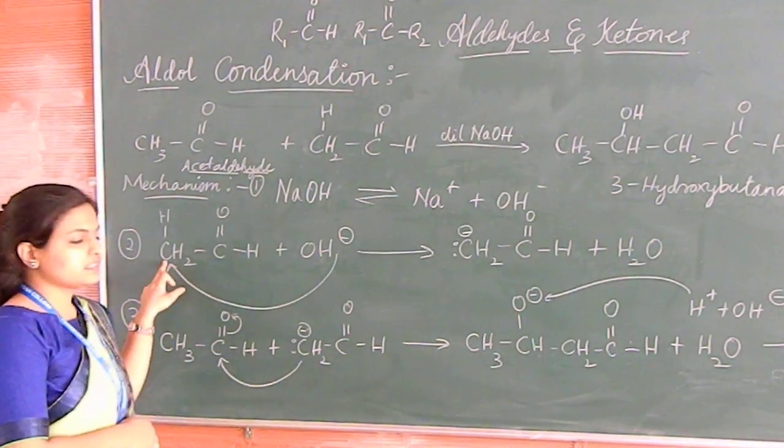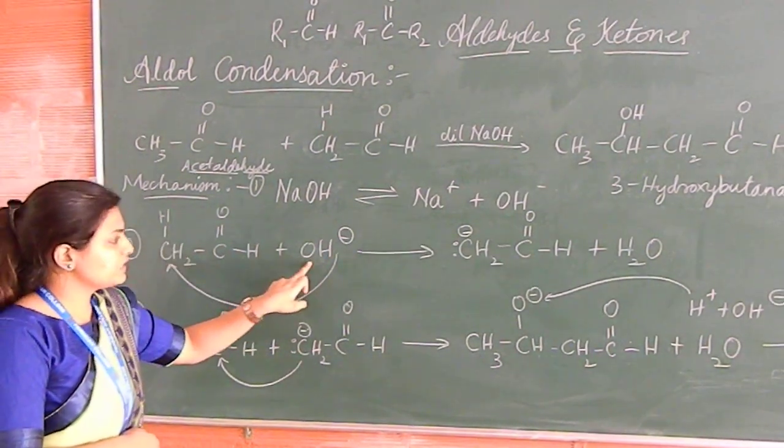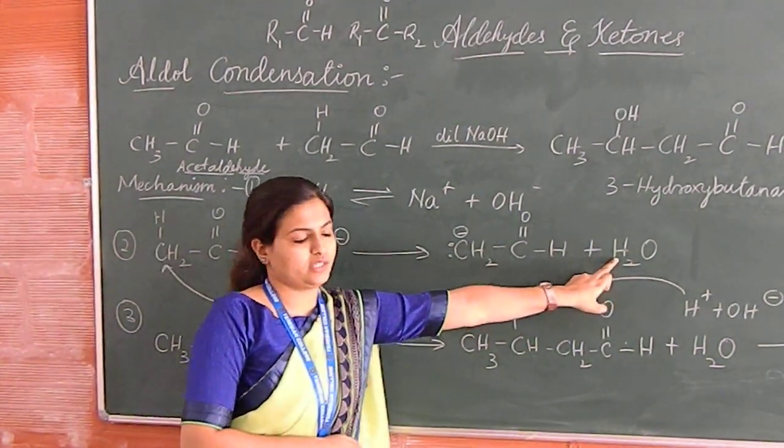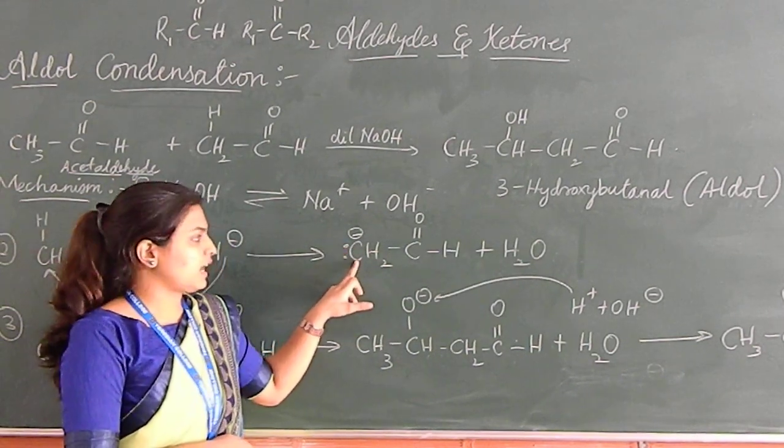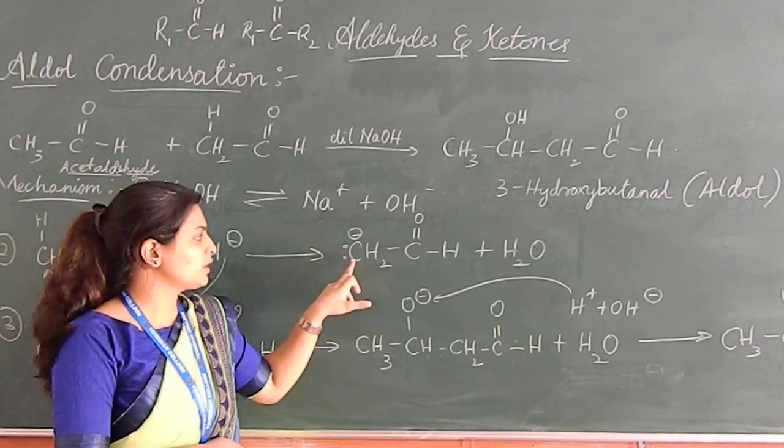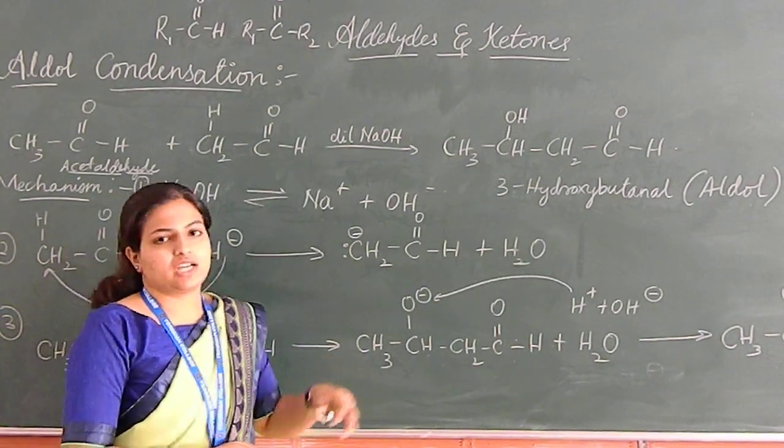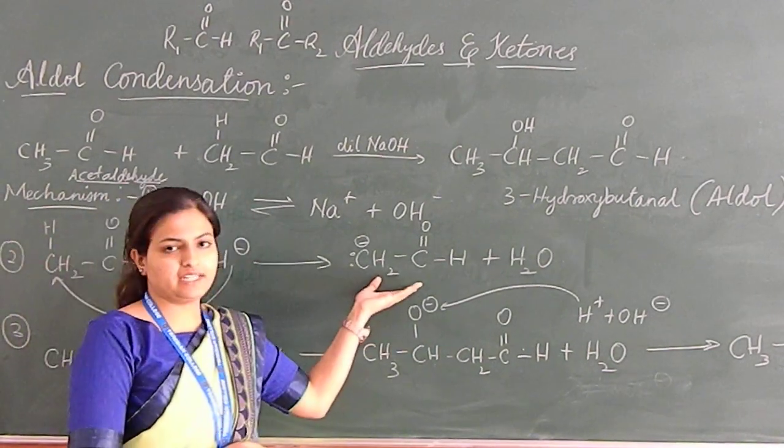What does it do? OH- grabs this H+ and eliminates as water. And this turns as an enolate ion, which is enolate ion in the sense the carbon is also called as carbanion, because this carbon is adding two electrons with a minus charge. Carbon with a negative charge is called as carbanion.